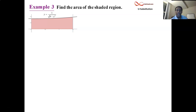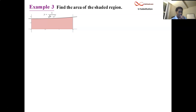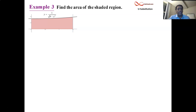We start off with this example asking us to find the area under the curve. The curve is 1 over the square root of 9 minus x squared. Judging by the graph, we're interested in x equals 0 to x equals 1.5 — but let's deal with the improper version of that, which is 3 halves.